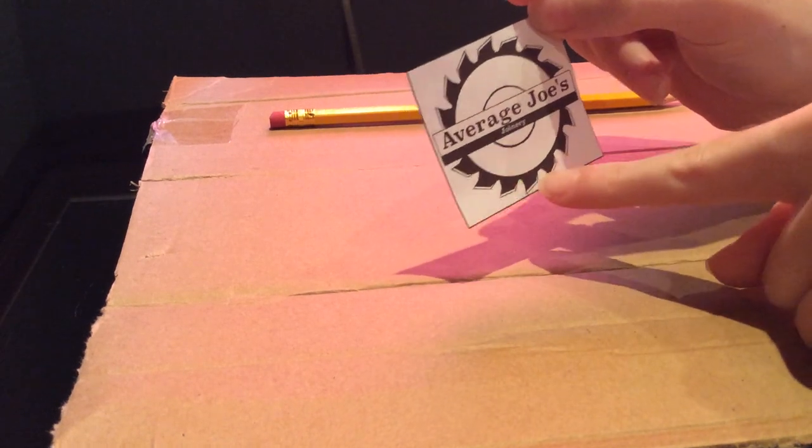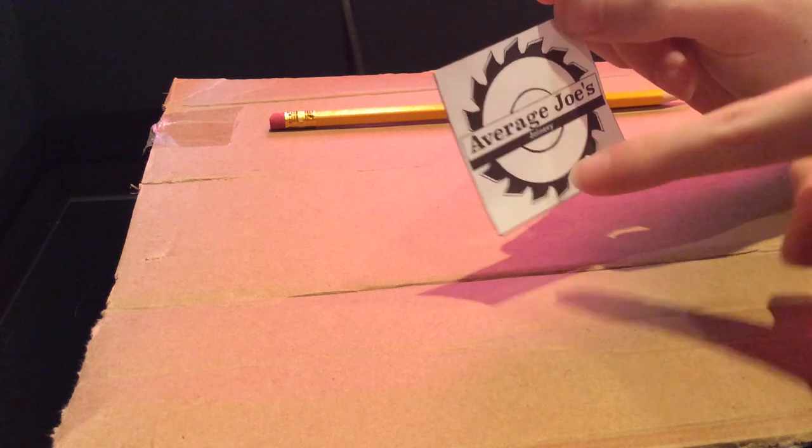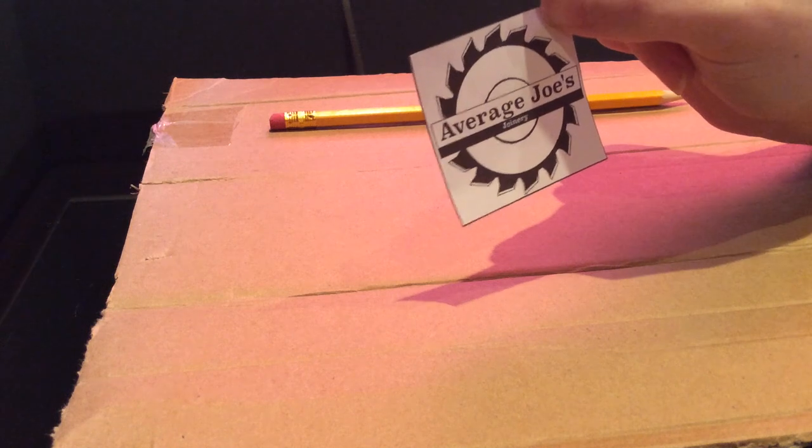All I'm going to do is go over with pencil over all the black parts, leaving the white parts. I'm also going to leave out the lettering because I think that will be too delicate to go onto the stamp.